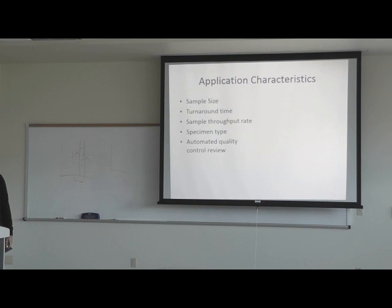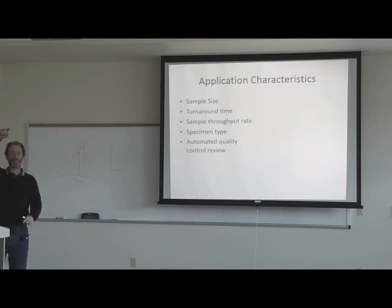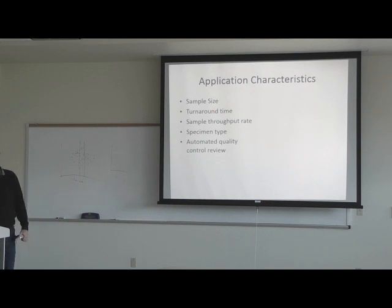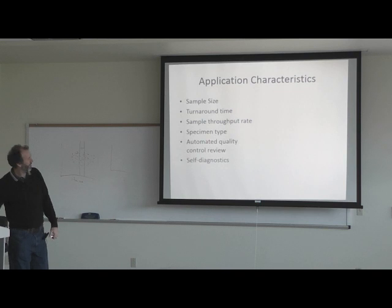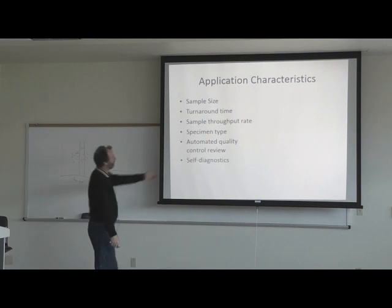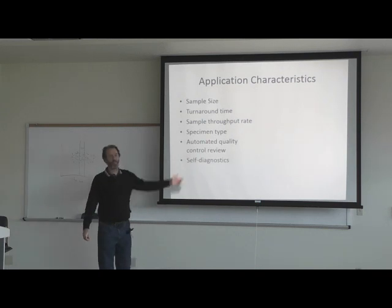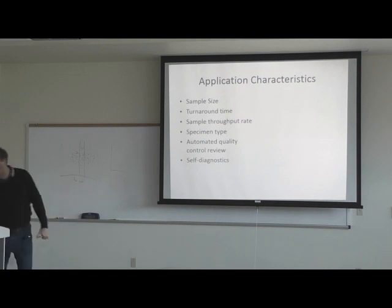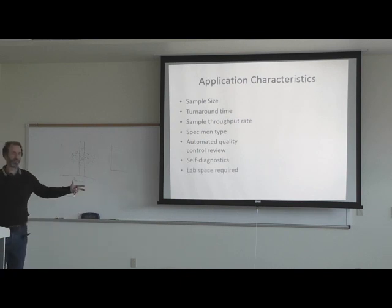The R-4S rule means your precision has gone way bad all of a sudden. There are also self-diagnostics on some machines, which help you out. Lab space is important — a lot of hospitals have limited space for their lab, and some of these automated machines take up an entire room.